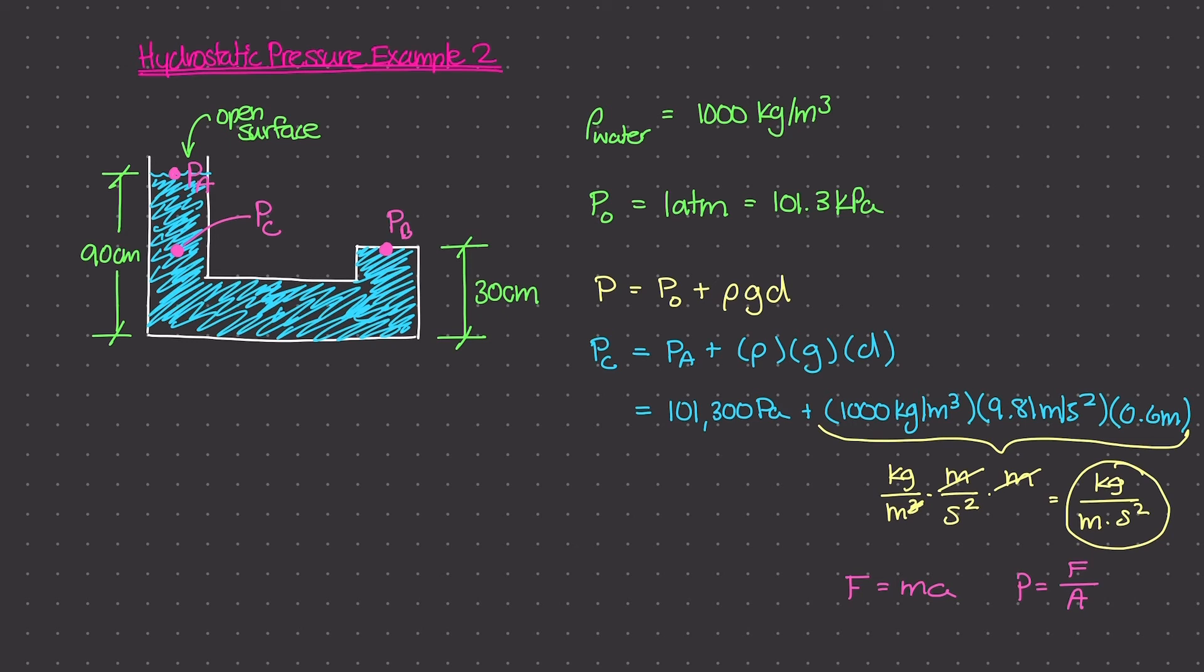Well, pressure, now, the units of pressure is going to be kilograms times meters over seconds squared, all divided by area. And area is simply meters squared. Area is just a two-dimensional unit.